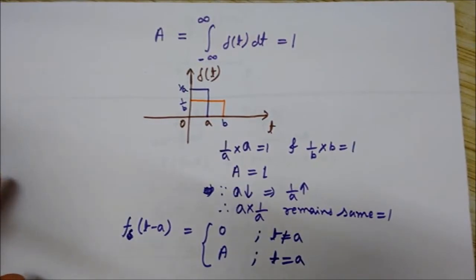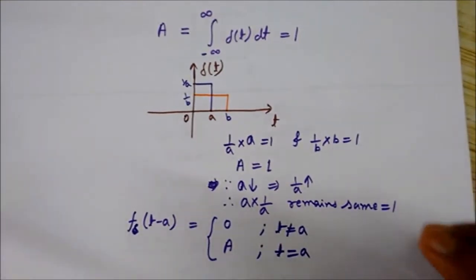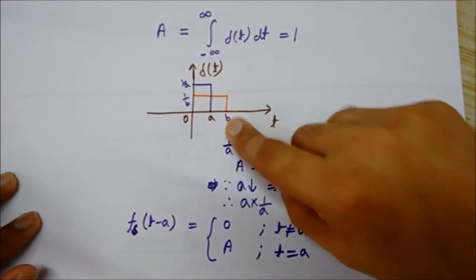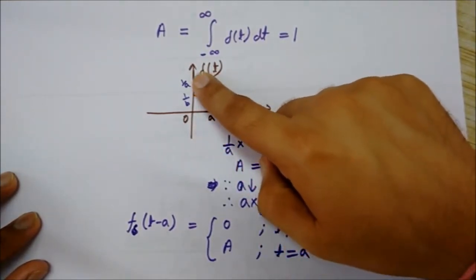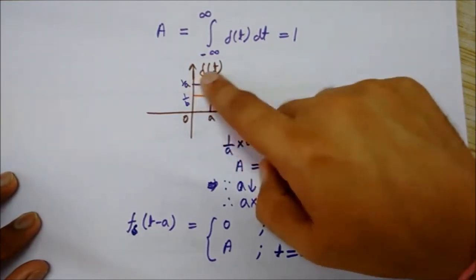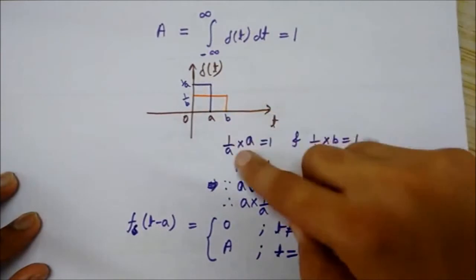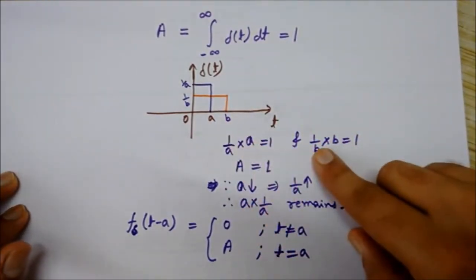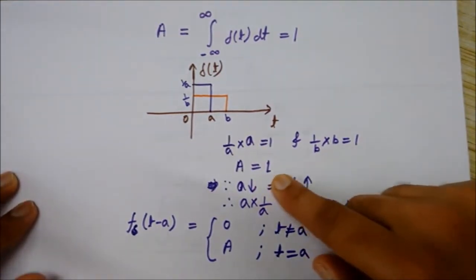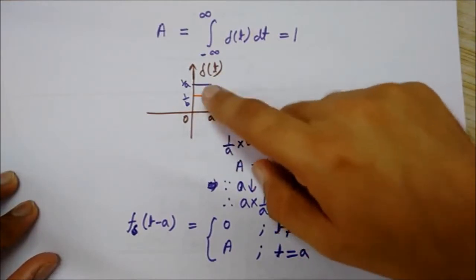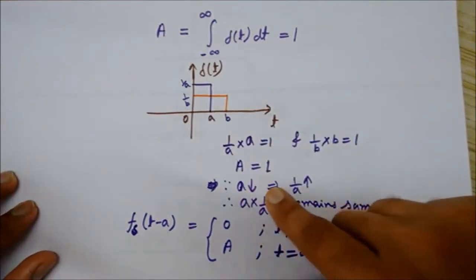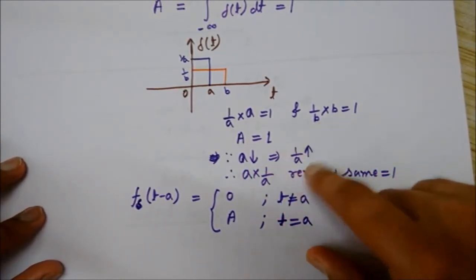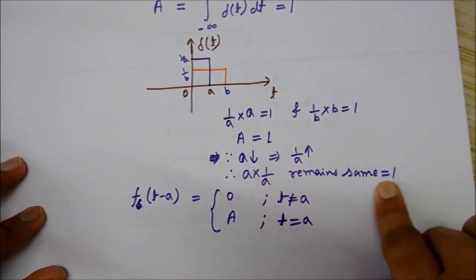We can also understand this with a graphical example. I have drawn two rectangular shapes. For the blue rectangle, the width on the x-axis is 'a' and the height on the y-axis is one over 'a', so its area is one over a times a, which equals one. Similarly, the area of the orange rectangle is one over b times b, which also equals one. As we decrease the value of 'a', the value of one over 'a' increases, so a times one over 'a' always remains one.